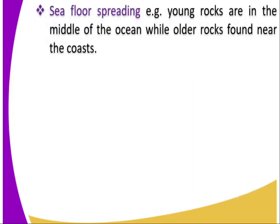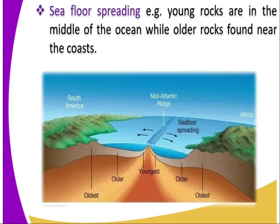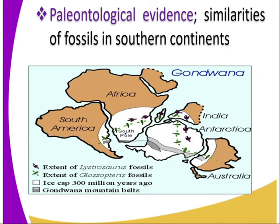Another evidence is sea floor spreading. Young rocks are found in the middle of the ocean, while older rocks are found near the coast. The youngest rocks are at the middle, near the mid-ocean ridge, while the oldest are at the coast. So that is another evidence that supports the continental drift theory.